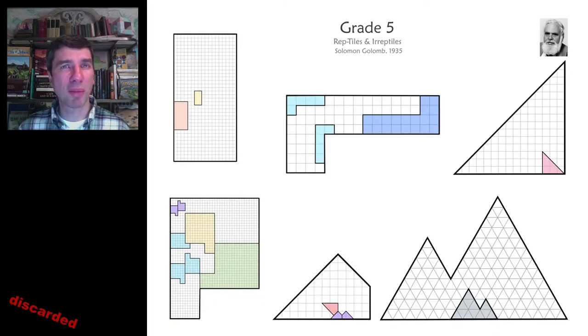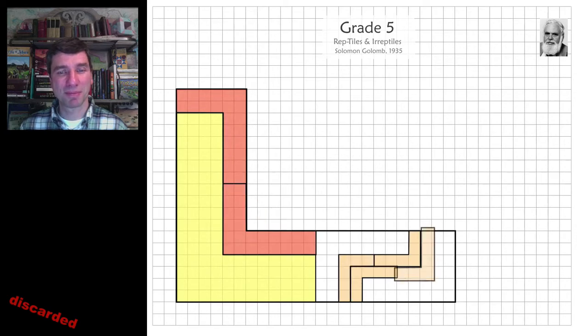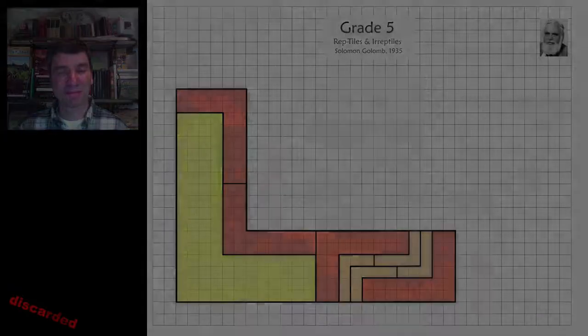Another beautiful problem at the intersection of art and math are reptiles and irreptiles. If you click on the center of the screen, you'll be taken to a video that describes these in more detail. But here's a single example. Here is an L shape. And I've given you two similar L shapes inside. You have to finish off tiling this L shape using all similar shapes. So I'll give you the solution. Here it is.